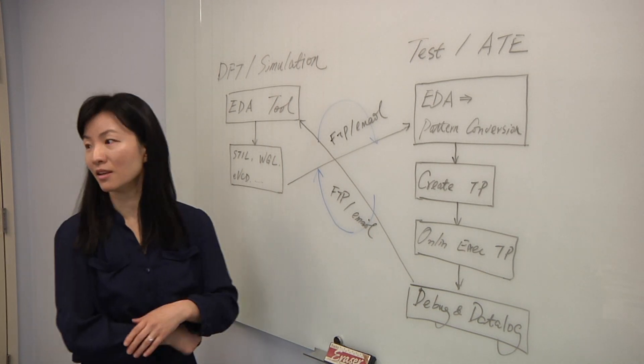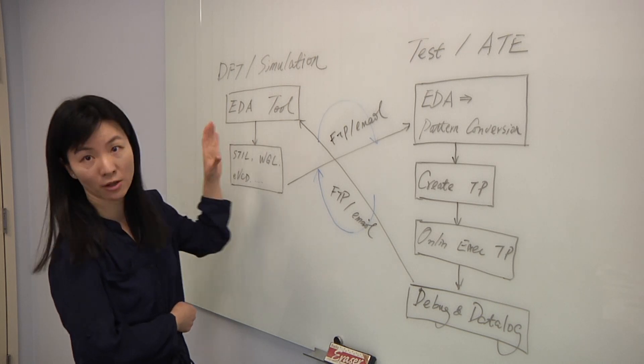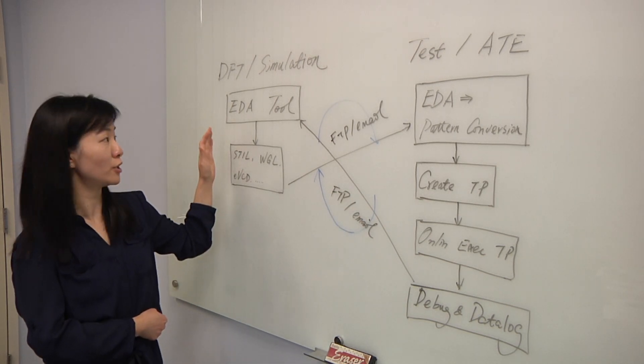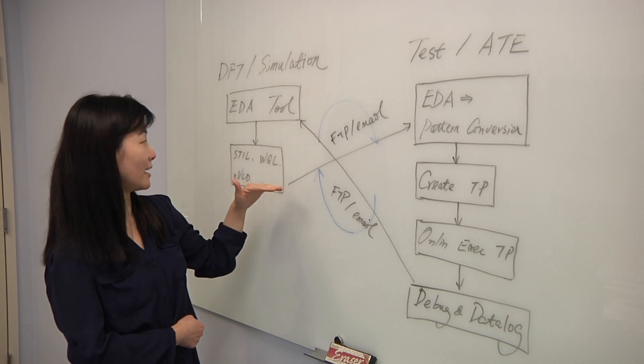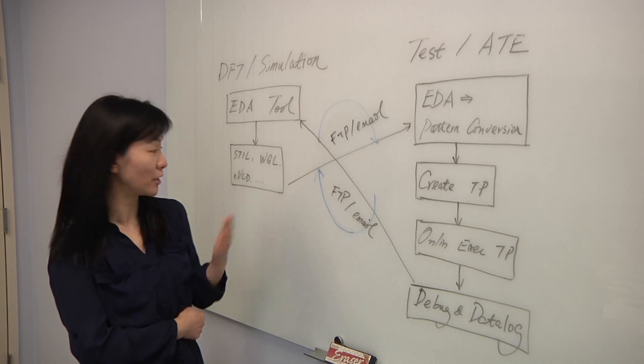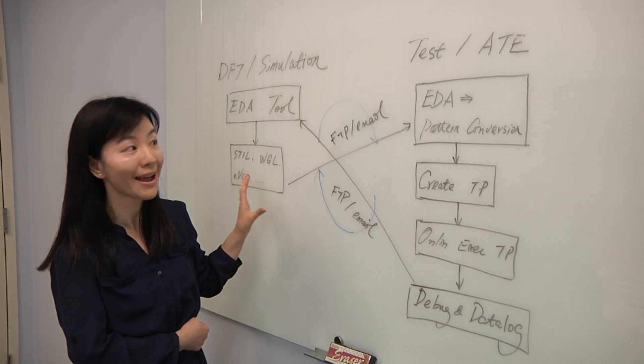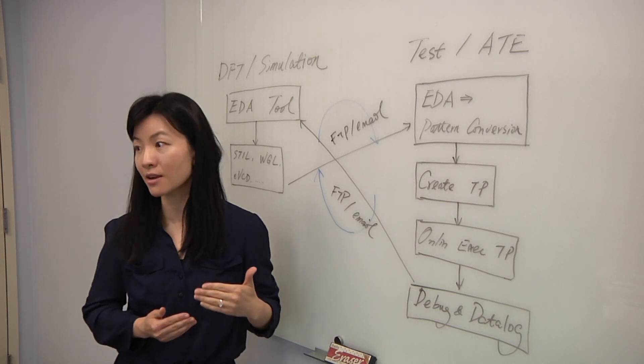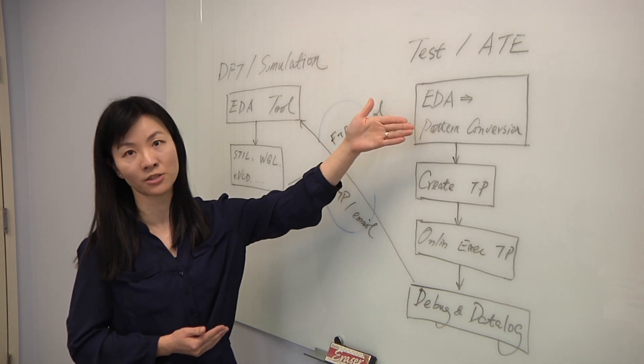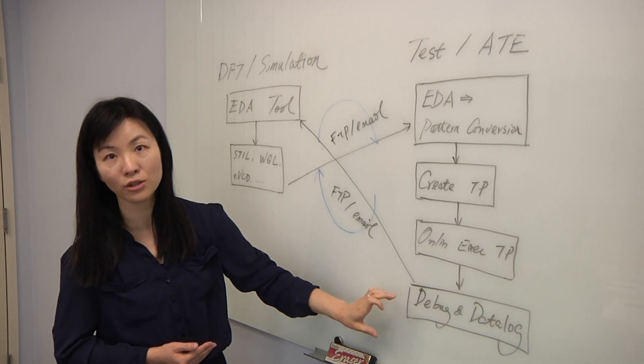So take the DFT as an example. DFT simulation, how to get to the ATE? This illustrates a typical working process for both DFT side and the ATE side. For DFT engineers, they normally use EDA tools to do the simulation. And after they have done that, they generate a certain format of the test contents, say patterns. For example, STIL file, WGL file or VCD, EVCD files. Well, for the ATE side, once they get those patterns in a format that ATE cannot recognize, first step they need to translate, they need to convert those patterns from the EDA format to the test format. And then they can generate the test program by running those patterns online to do the debug and do the data log.